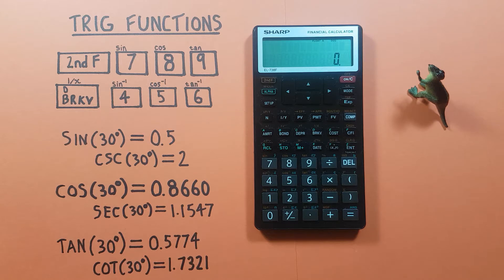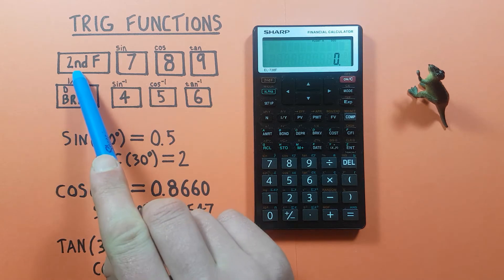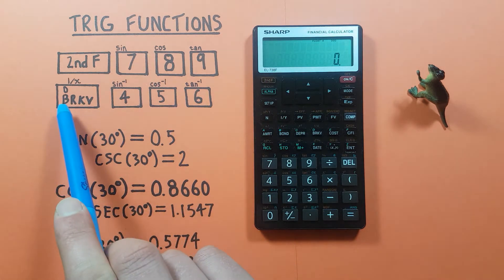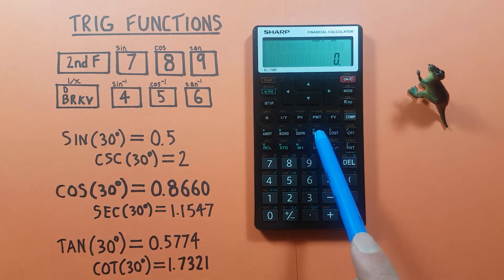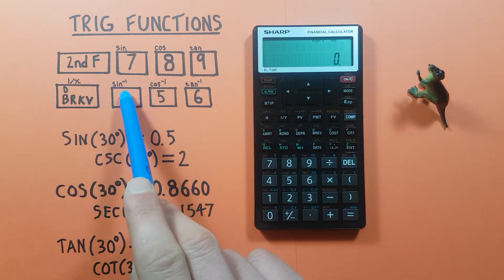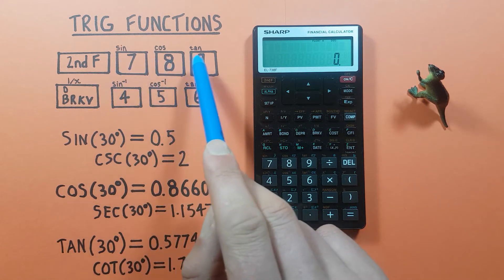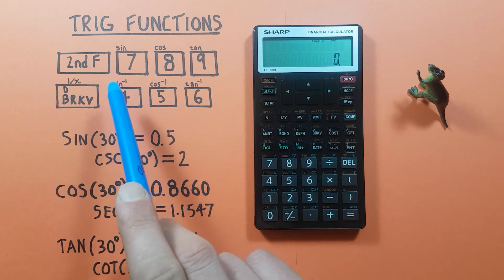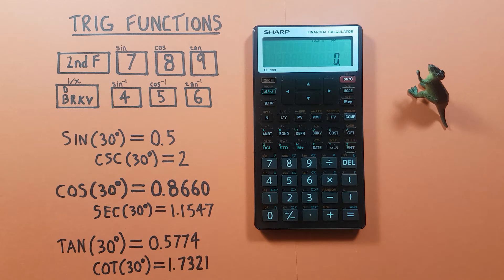To do this we'll be using the second function key that looks like this located here. The break-even key that looks like this located here with the green D on it, as well as the four five six seven eight nine keys located right here that have the second functions of sine, cosine, tan, arc sine, arc cos, and arc tan.